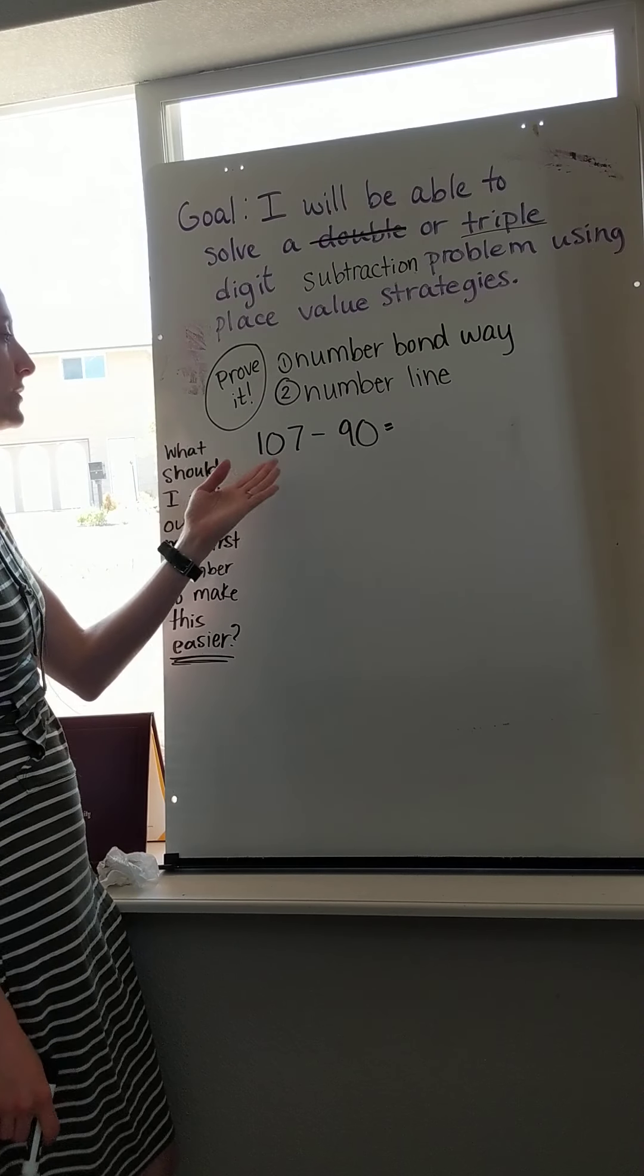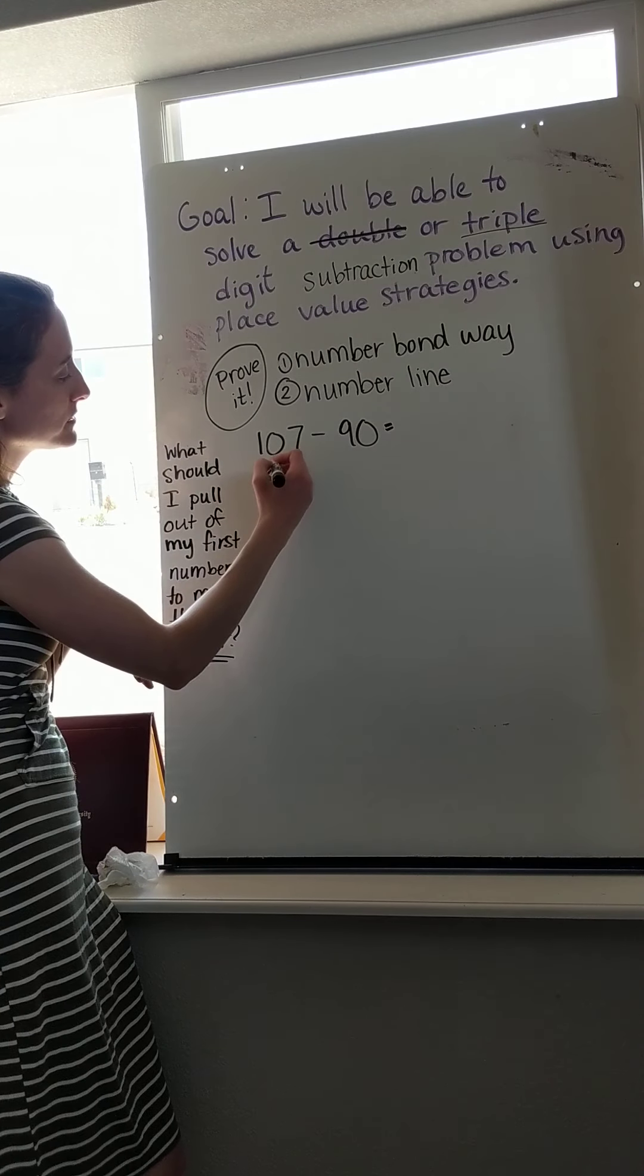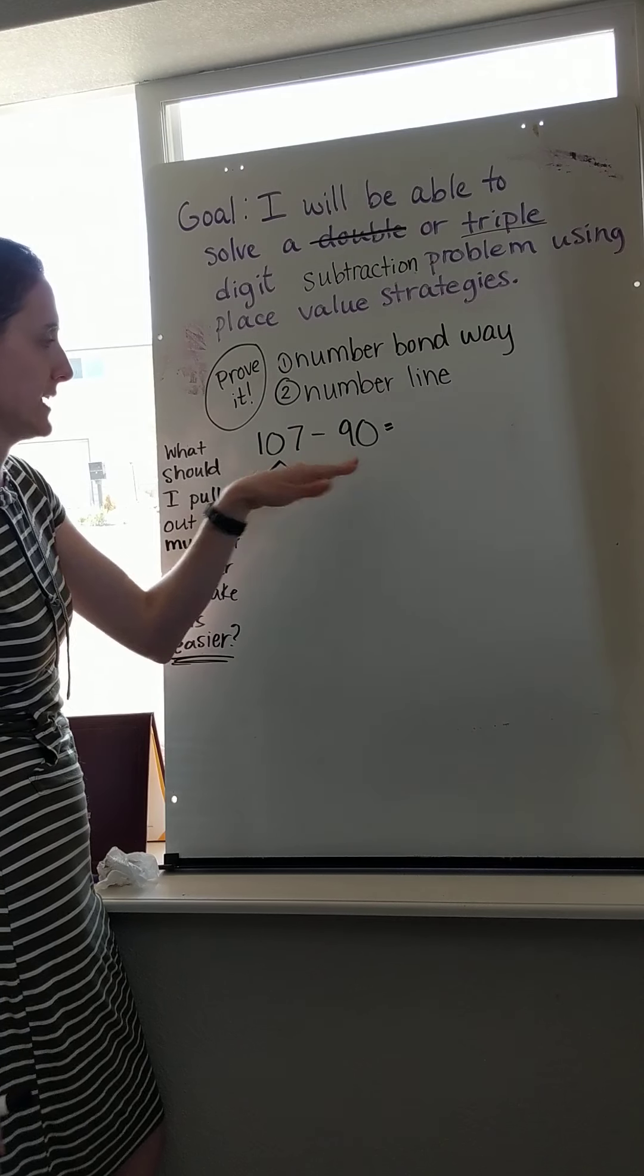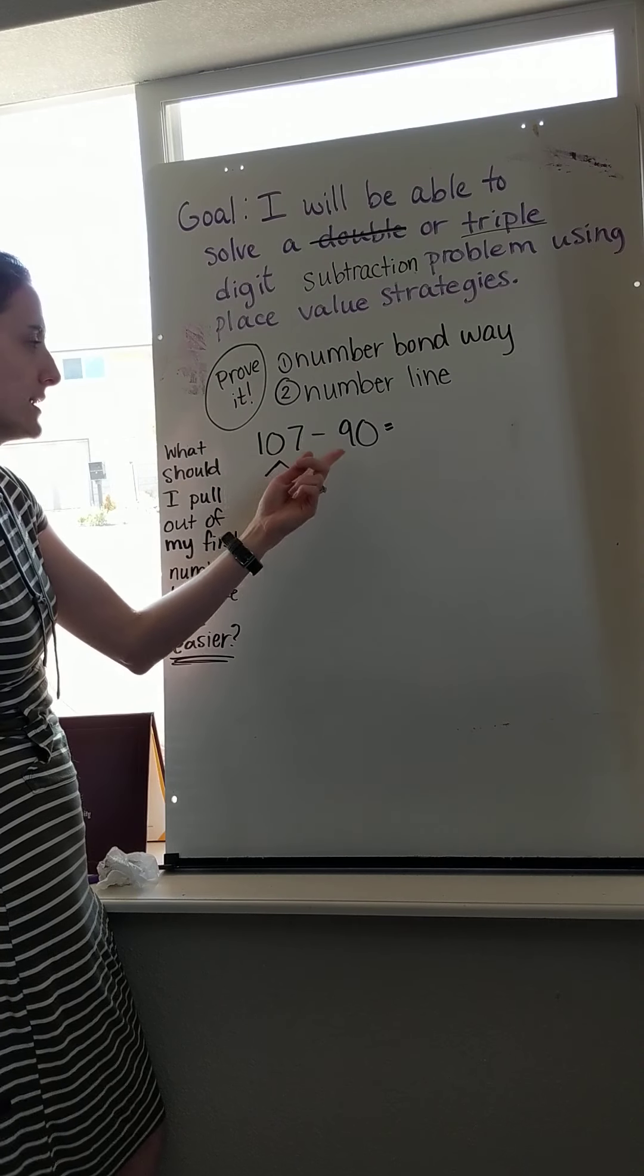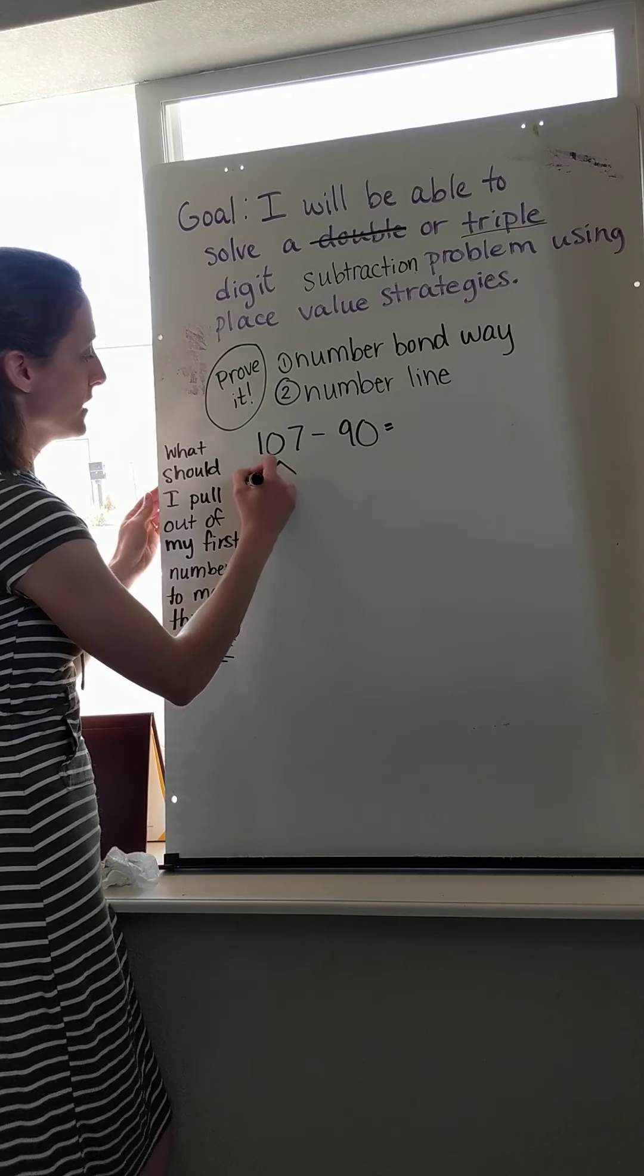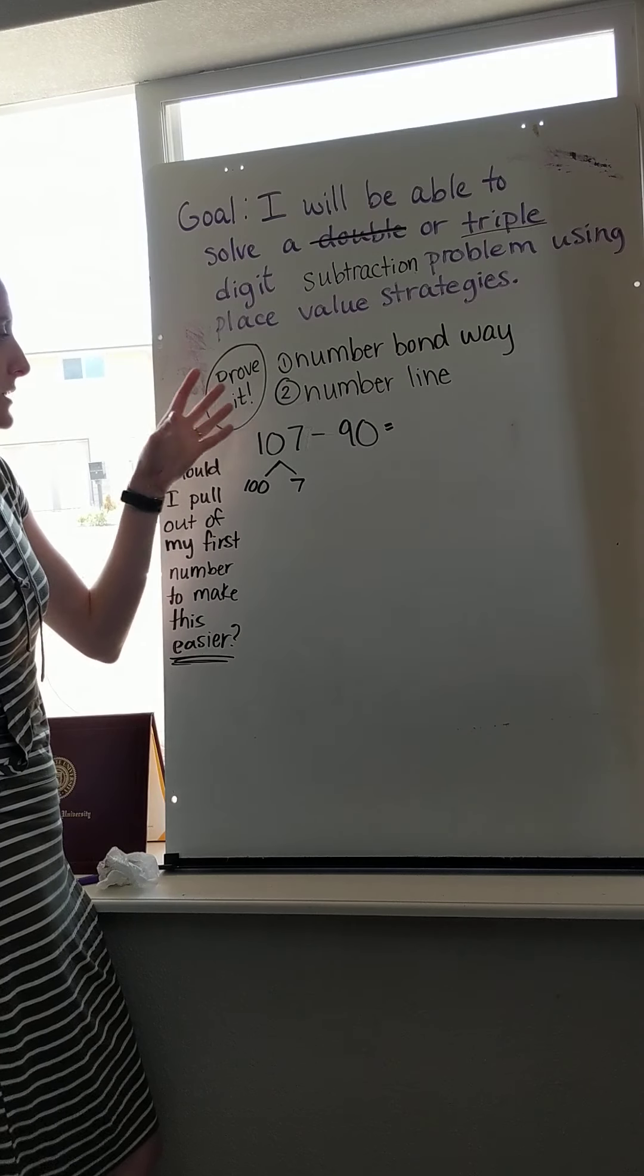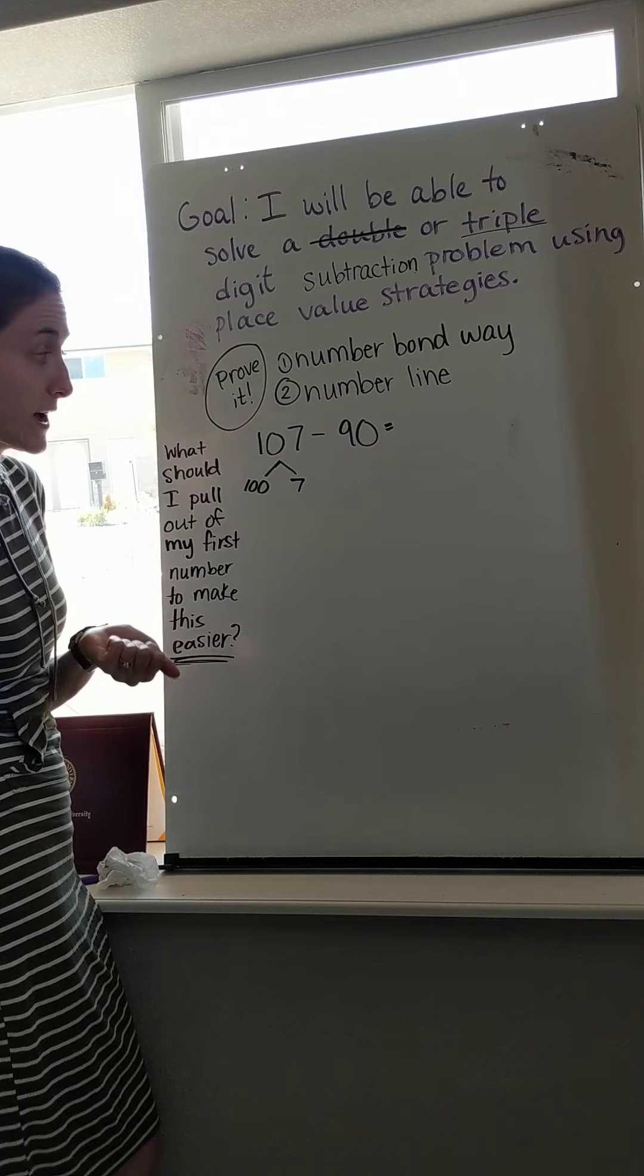Because right now, 107 minus 90 is a little bit complicated. But I know I can pull something out of this number using a number bond in order to take 90 away more quickly. So I have 107 minus 90. I know if I take 7 out of here, that's not going to help me take away 90, because 7 isn't big enough. But if I take 100 out of here, I know I can do 100 minus 90 pretty easily. But then I would just be left with 7. So this strategy is kind of pulling out hundreds or tens to subtract faster.